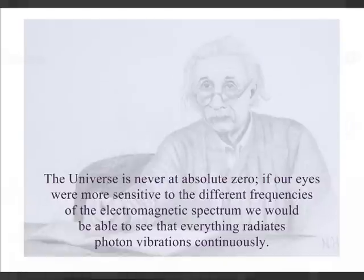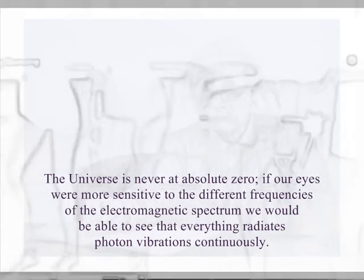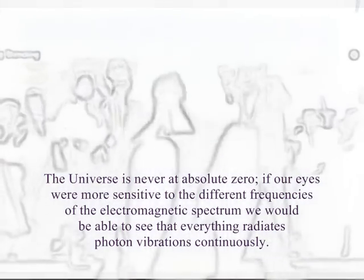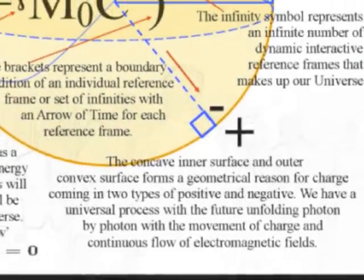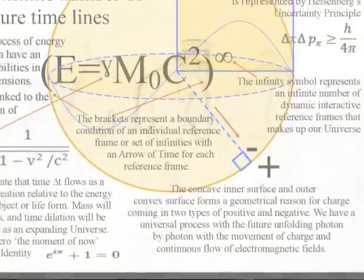We have the spontaneous absorption and emission of light relative to the atoms of the periodic table, with the future unfolding with each new photon-electron coupling, or dipole moment. This process forms a movement of positive and negative charge, with the continuous flow of electromagnetic fields.